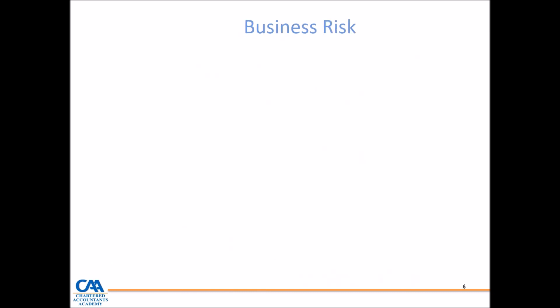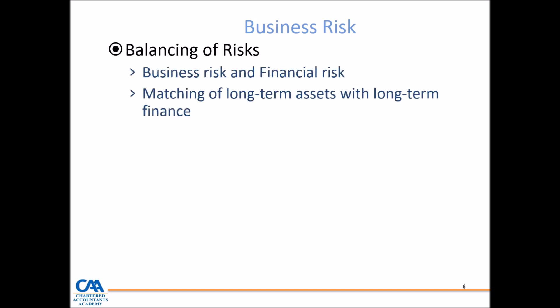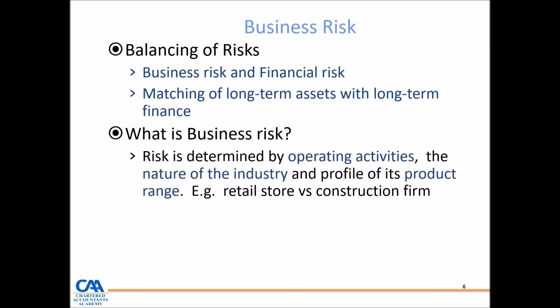Starting with business risk — the moment you decide to go into business, it carries some form of risk. Risk is the potential that things are not going to go as intended. The key thing from a business perspective is being able to balance those risks, specifically business risk and financial risk. Business risk is determined by the operating activity of the entity as well as the nature of the industry.